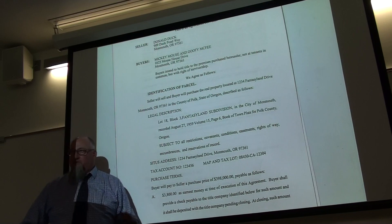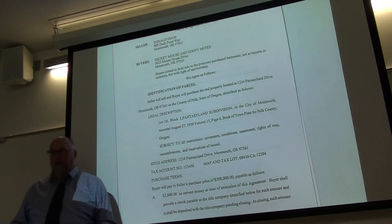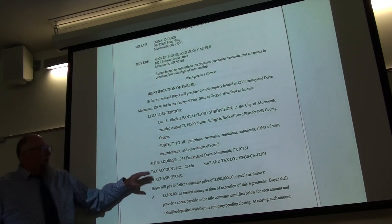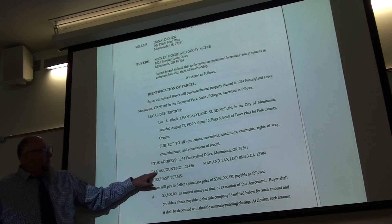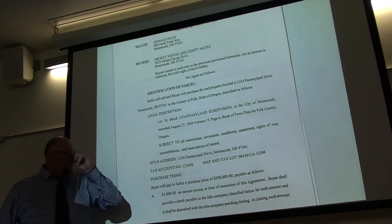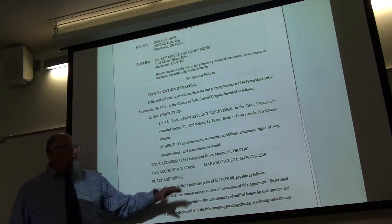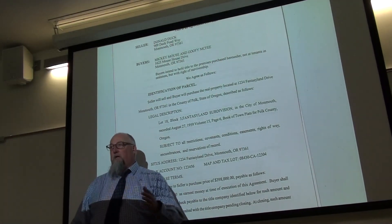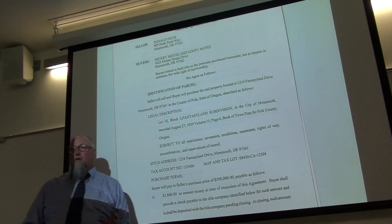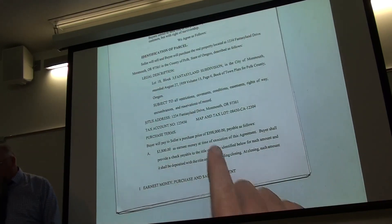You'll also include the tax account number — there may be more than one for a given property — and the map and tax lot from the assessor's plat map, since there may be more than one tax lot, especially if the property crosses county lines or township lines. Then you outline the terms of the purchase.